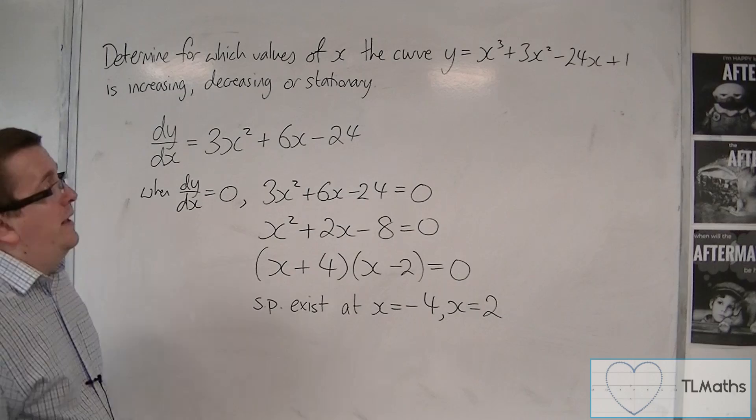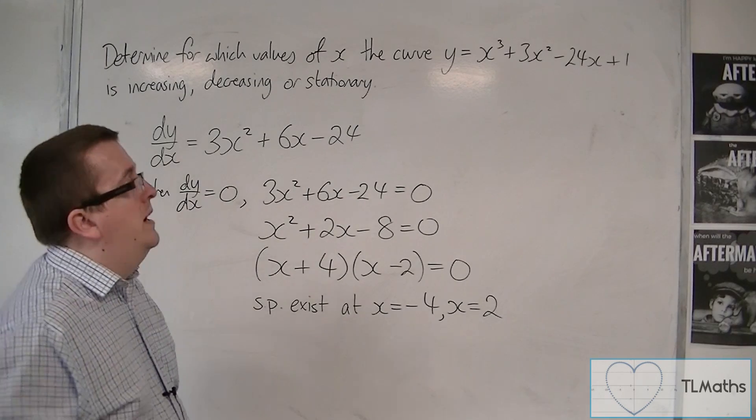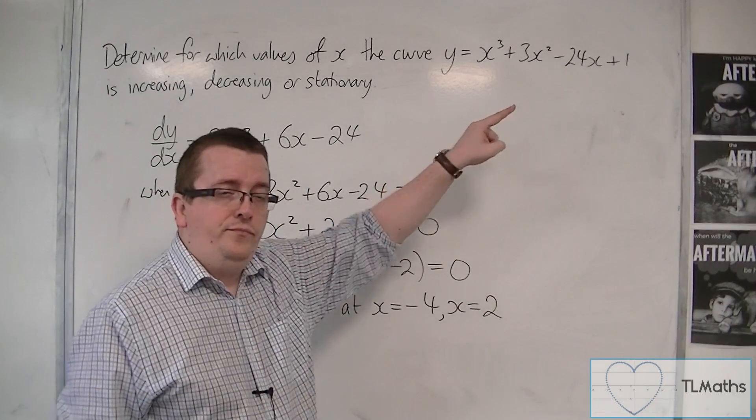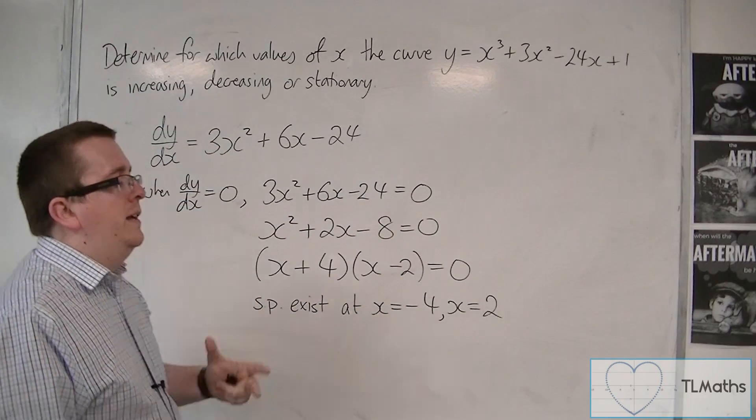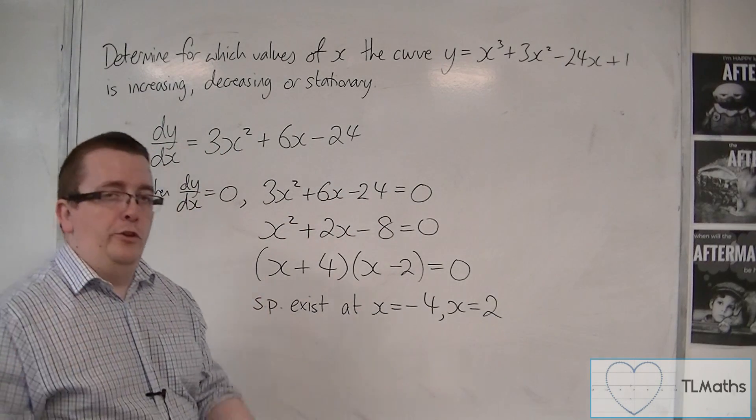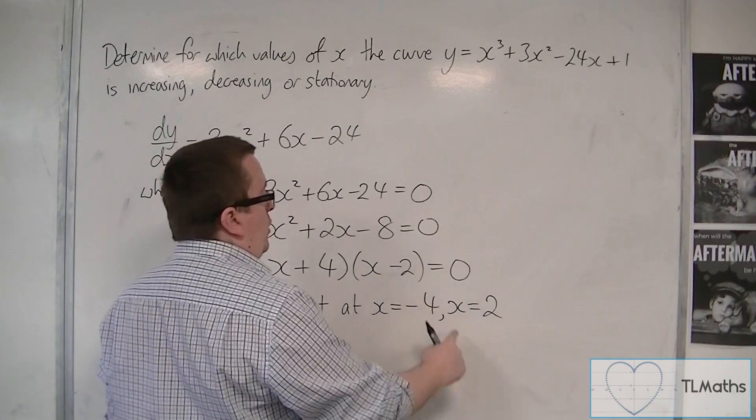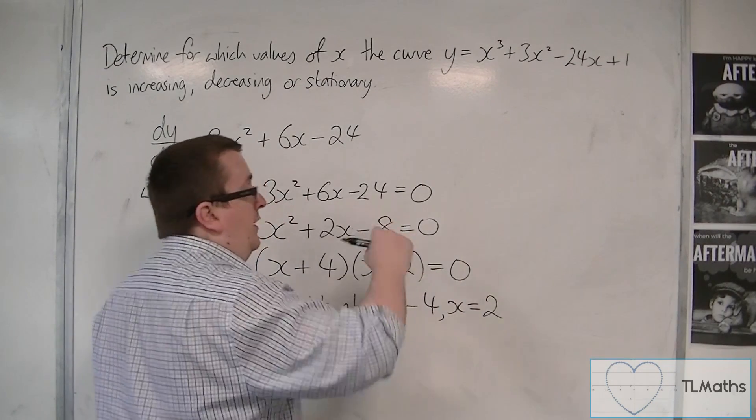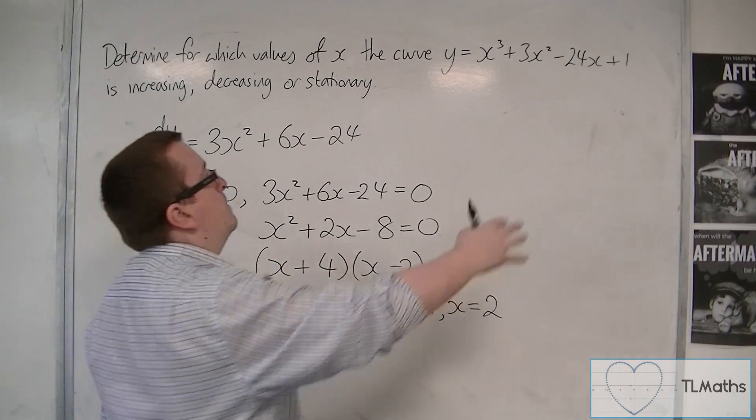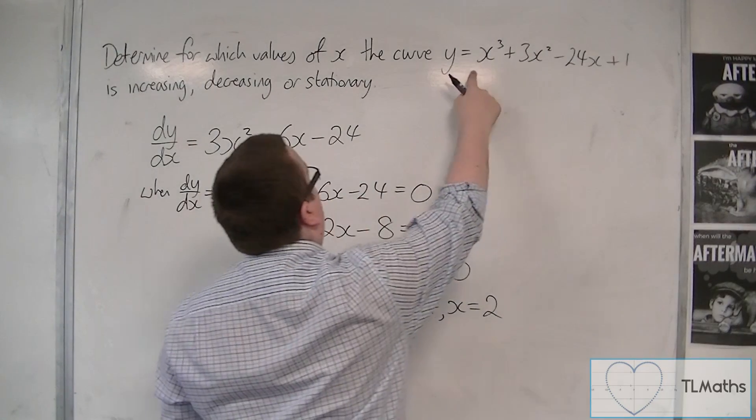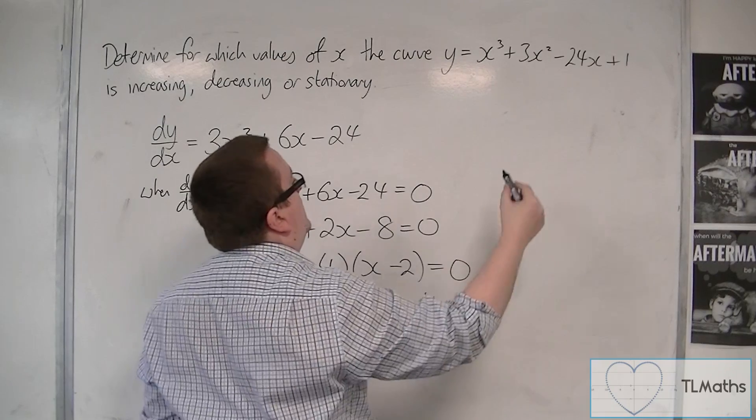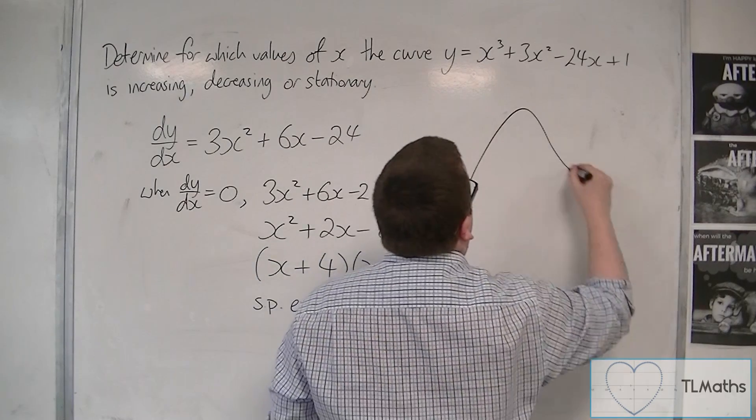Now, to do this, what I would suggest, because this is a cubic, we know what a cubic looks like. We know that a cubic with two stationary points, two turning points, where the x cubed at the front is positive, means that the curve must look like this.